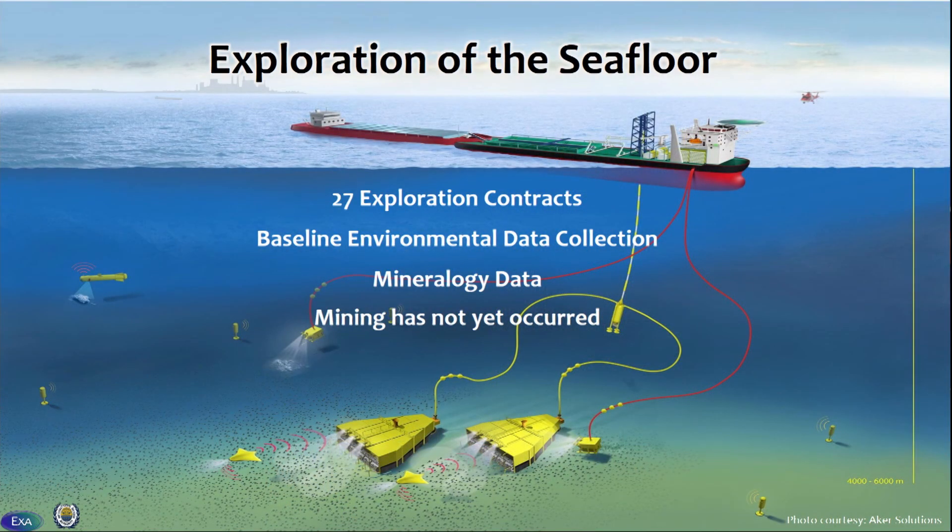We are also creating standardized reporting templates for the upload of data by contractors. There are currently 27 exploration contracts happening in international waters. The ISA has entered into 15-year contracts with these 27 different contractors, who apply for exploration rights in specific areas. These contractors are either educational or academic institutions, government agencies, or private companies interested in these different minerals. Within those exploration contracts, they're collecting baseline environmental data, which will be publicly available, and mineralogy data, which is confidential and shows the economic value of those mineral types. It's important to note that mining has not yet occurred, and all of these regulations are still in development.